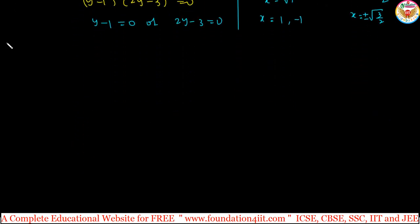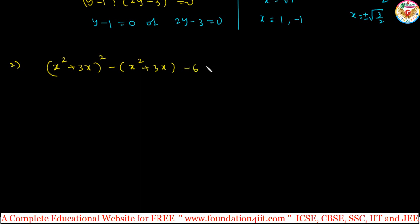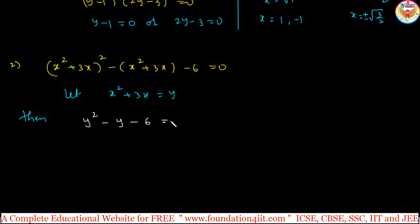Take one more example. The question: solve (x squared plus 3x) whole squared minus (x squared plus 3x) minus 6 is equal to 0, where x belongs to real numbers. By observing the question, we need to identify whether we can convert it. Let x squared plus 3x equal y. Then it changes: y squared minus y minus 6 is equal to 0.